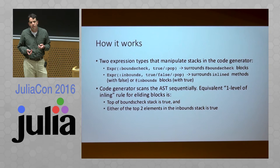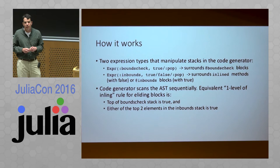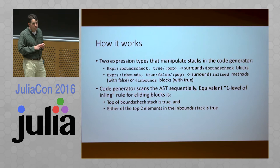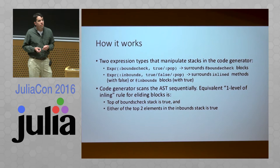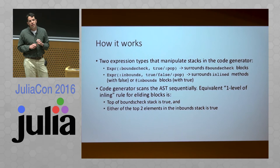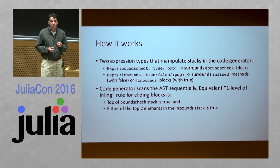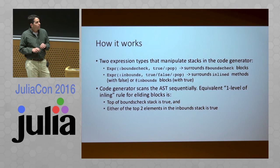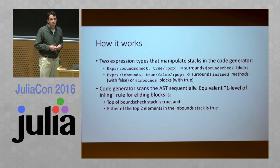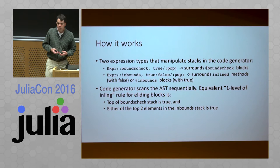Inside the compiler, the code generator keeps track of two stacks. We have meta expressions injected into the abstract syntax tree to manipulate these stacks — one with a boundscheck header and one with an inbounds header. The @boundscheck macro wraps a block of code in something that pushes a true value onto the bounds check stack and then pops it off. The @inbounds macro pushes a true value and pops it off a separate stack. The code generator reads these AST expressions sequentially, and the one-level-of-inlining rule means examining these two stacks to decide whether to skip emitting code for a particular expression.